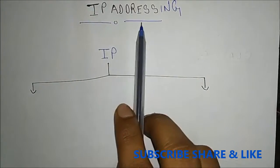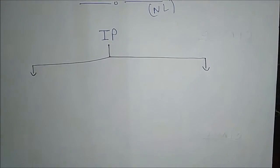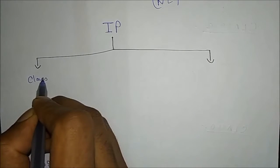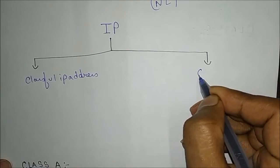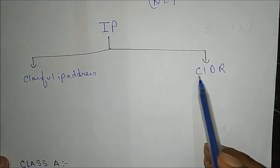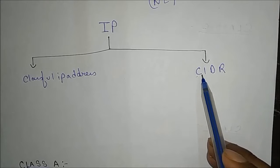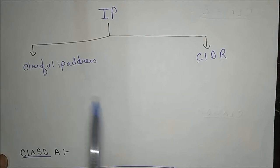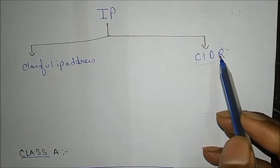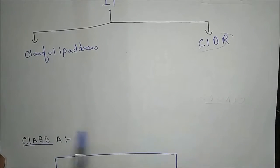Hello everyone. Today we are discussing IP addressing, which is done on the network layer. IP addresses are divided into two types: classful IP address and classless IP address. Classless is called CIDR — Classless Inter-Domain Routing. Today we will cover only classful IP addresses, and in an upcoming video I will make another video for CIDR.